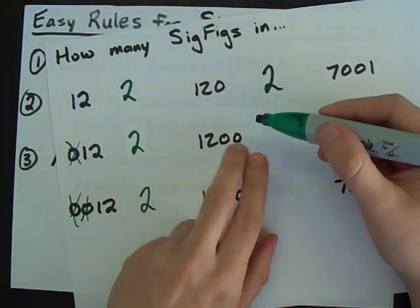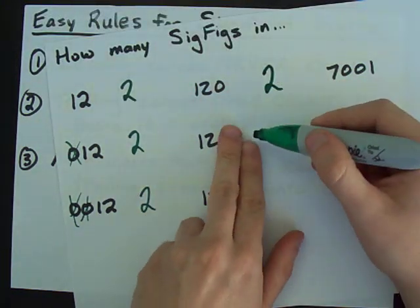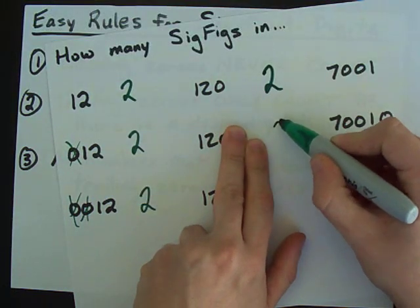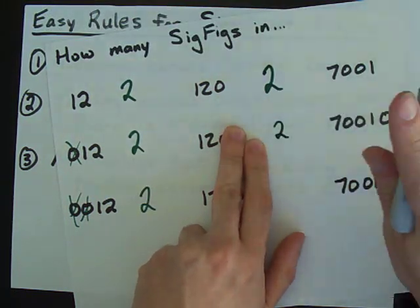These are also trailing zeros with no decimal point written anywhere. This also has two significant figures, just the one and the two.